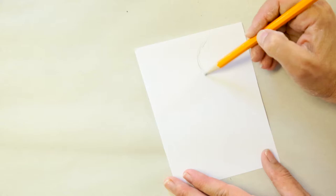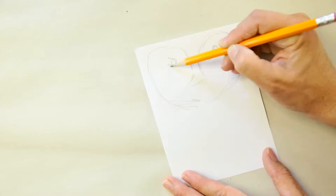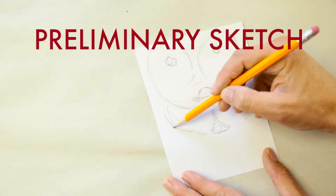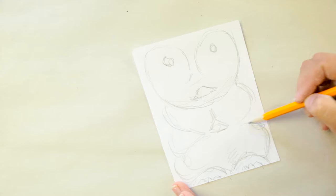To begin, let's come up with a plan for how we will carve our clay. We do this by sketching out our ideas using a number two or graphite pencil. This is called a preliminary sketch. Make sure the size of your paper is the same size as your clay.